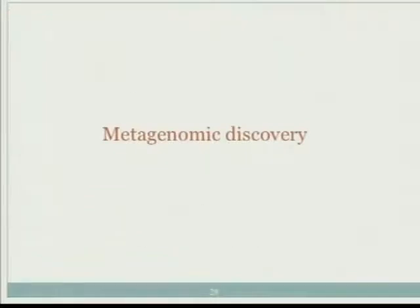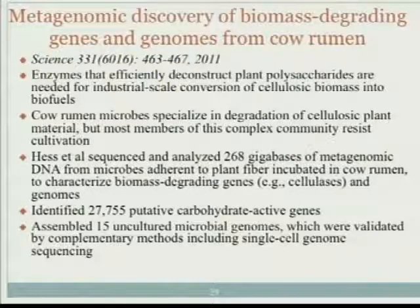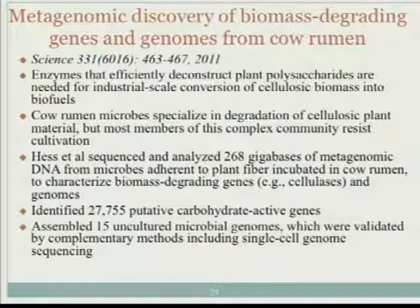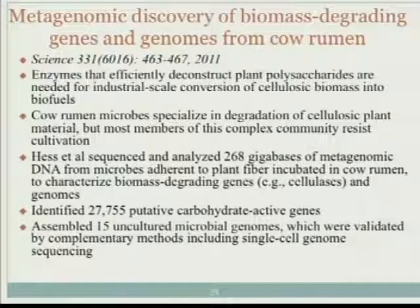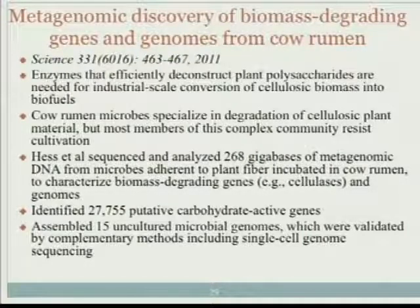What we can learn from metagenomic datasets - here is one new paper from Science. This is just one application of what you can do with a metagenomic dataset. The authors looked for enzymes involved in plant polysaccharide utilization, and they were very interested in cellulase involved in the degradation of cellulose. They got about 268 gigabytes of data from the bacterial community in cow rumen, because cows can digest those plant materials.